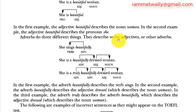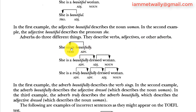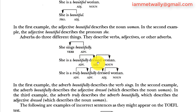Adverbs do three different things: they describe verbs, adjectives, or other adverbs. For example, 'She sings beautifully' — beautifully describes the way she sings. 'She's a beautifully dressed woman' — beautifully describes the way she's dressed, and dressed is an adjective describing woman.